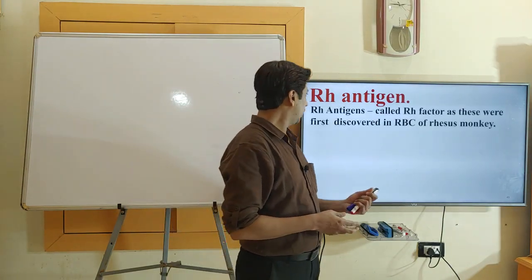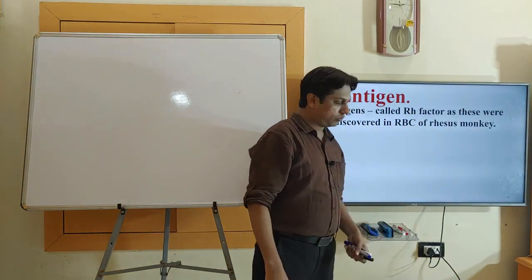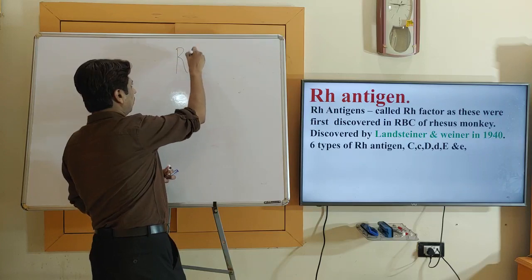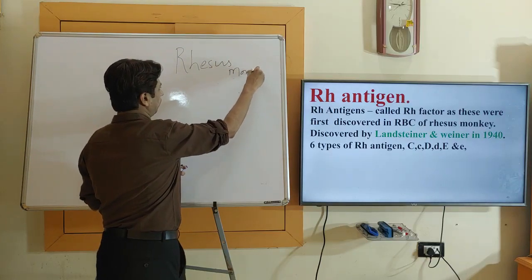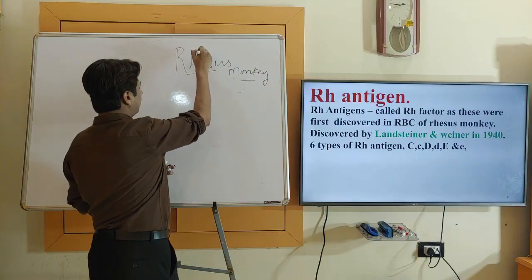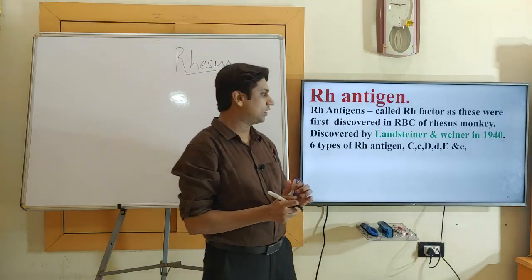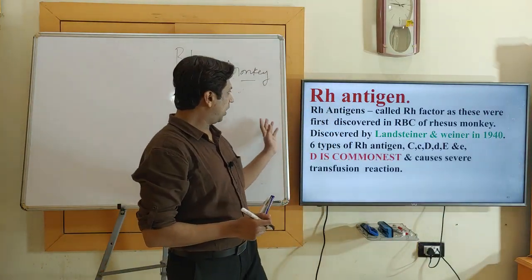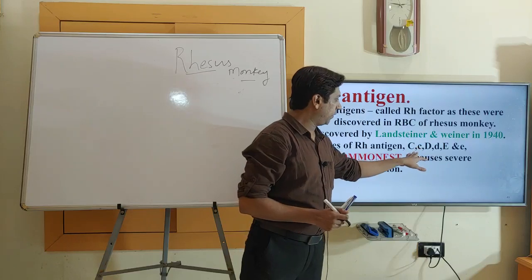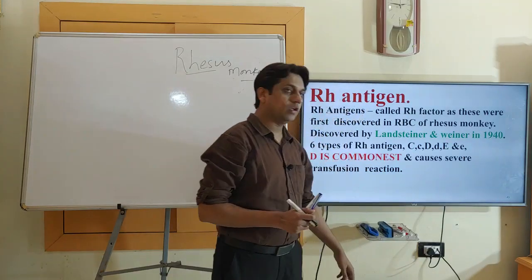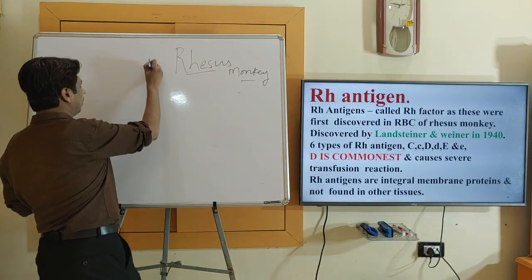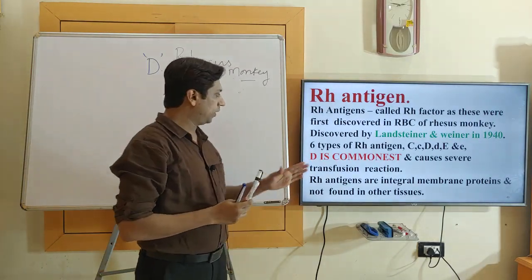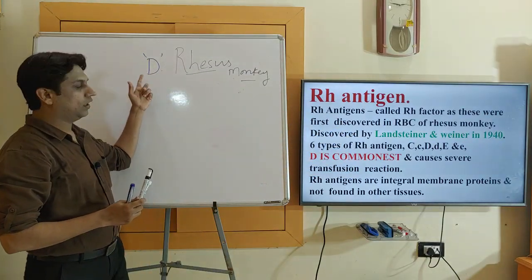The RH antigen is also called the RH factor. It was first discovered in the RBCs of the Rhesus monkey, which is why the term RH is used to designate this antigen. It was discovered by Landsteiner and Wiener in 1940. There are six types of RH antigen: capital C, small c, capital D, small d, capital E, and small e. The capital D antigen is the most common and is what we refer to when we say RH antigen.